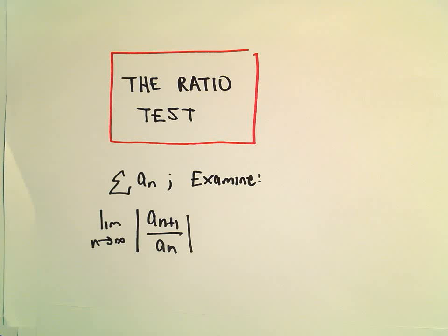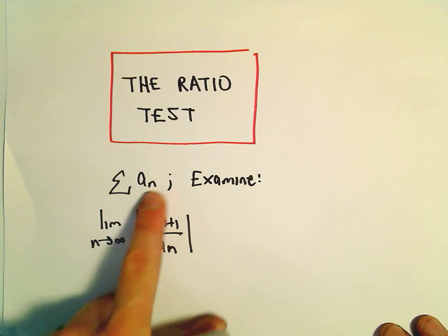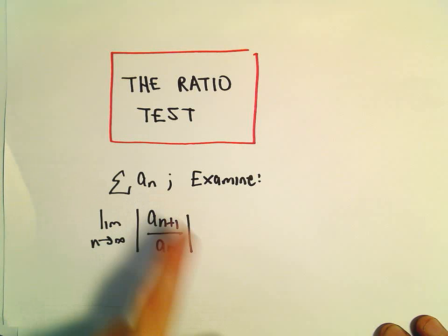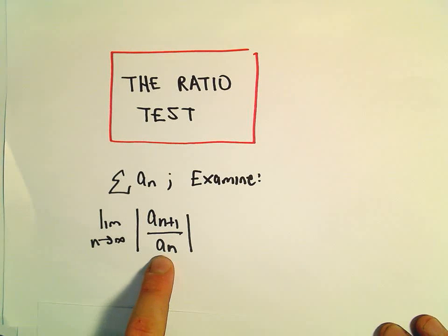Okay, here we're going to look at some basic examples of the ratio test. For the ratio test, if you have some formula a_n that describes the terms of your series, we look at the limit as n goes to infinity of |a_{n+1}/a_n|.